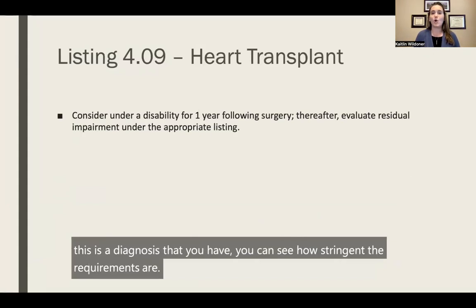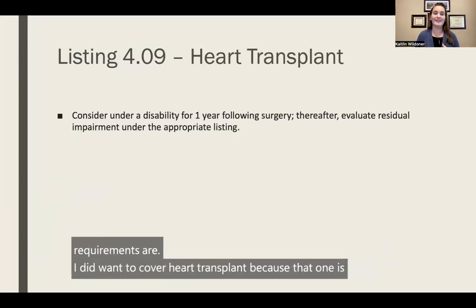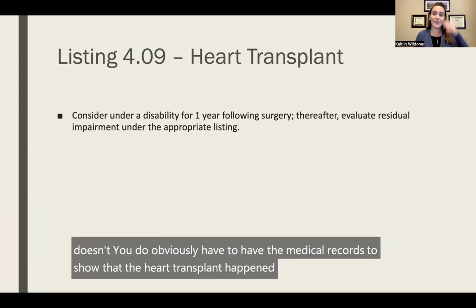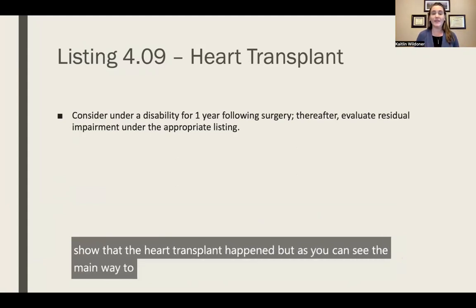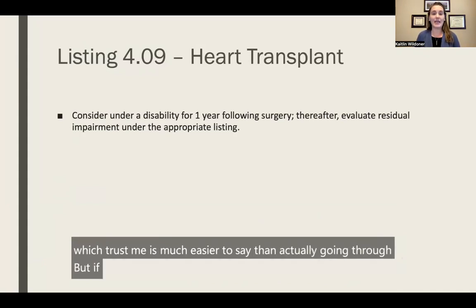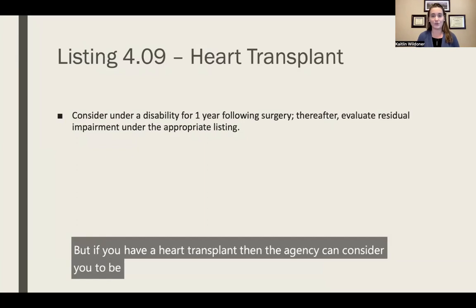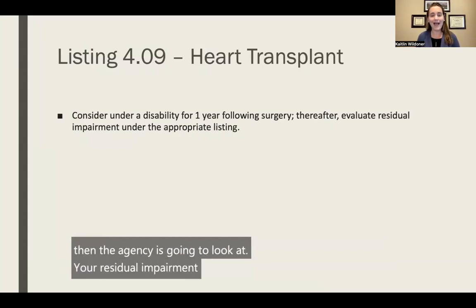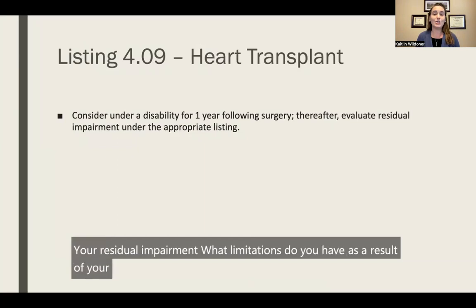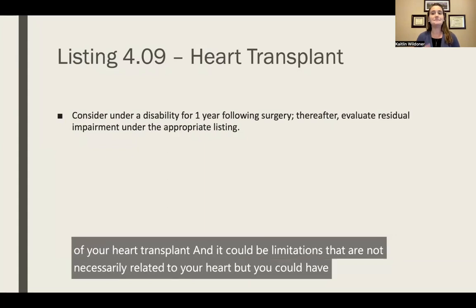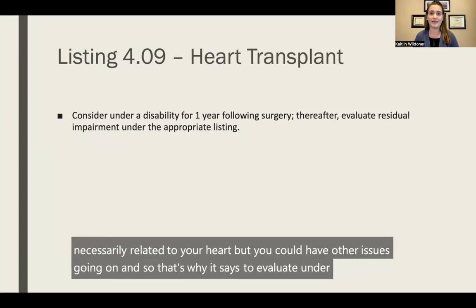I did want to cover heart transplant because that's one where you do obviously have to have the medical records showing the heart transplant happened. But the main way to be approved is by just having had the heart transplant — which, trust me, is much easier to say than actually going through. If you have a heart transplant, the agency can consider you to be disabled for a year after that surgery. After the year, the agency is going to look at your residual impairment — what limitations do you have as a result of your heart transplant, which could include limitations not necessarily related to your heart.